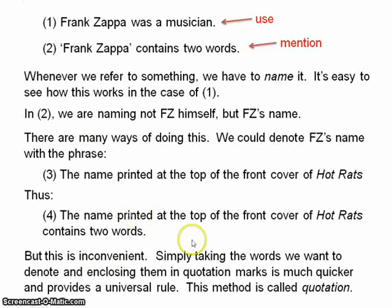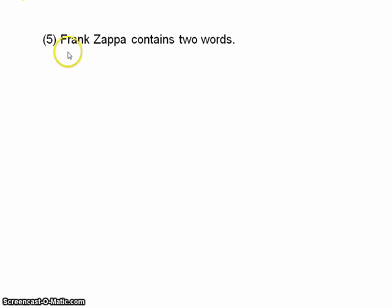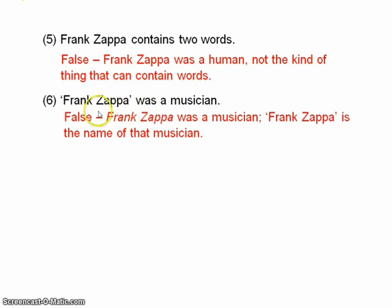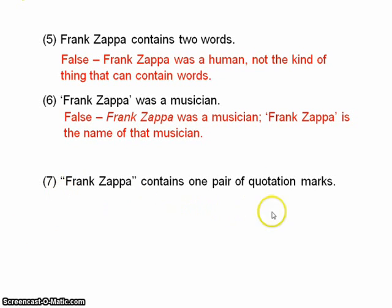Let's make sure you know exactly what's going on here. If you take the statement 'Frank Zappa contains two words,' this is false because Frank Zappa was a human, not the kind of thing that can contain words. Or consider: 'Frank Zappa' was a musician — this is false because 'Frank Zappa' enclosed in quotation marks refers to a person's name, and a person's name isn't a musician; it's just a linguistic object. You can also refer to the object that refers to Frank Zappa's name, giving you a second level of quotation marks, and you can extend those indefinitely.